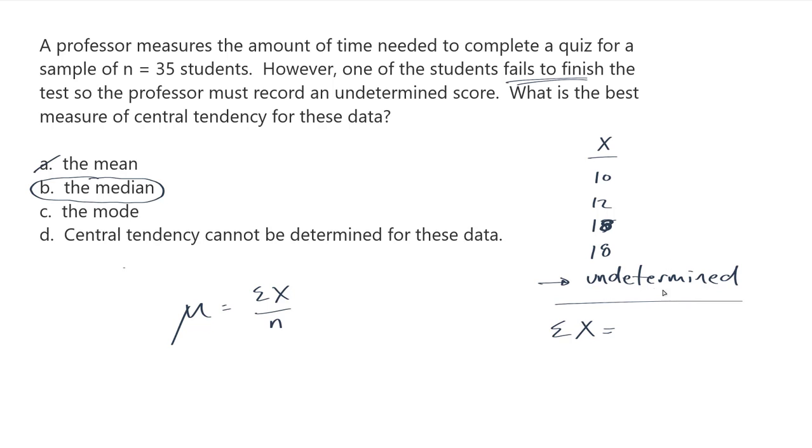Now you might be thinking this data here can't really be put into order. This is not a numerical value, but it can. We know that this person had not yet finished when this person here took 18 minutes, so they were going to take longer. So this is the shortest amount of time, the first person to finish, the second person to finish, the third, the fourth. And this person comes in last, even though they didn't get an actual value. So there is still some information here.